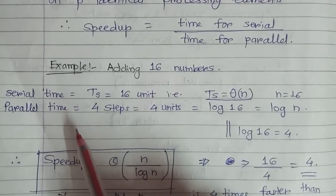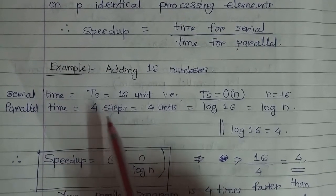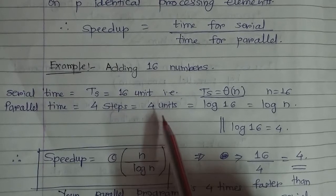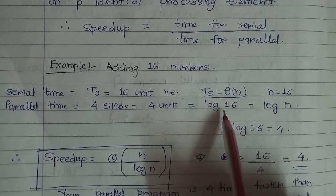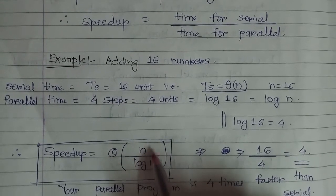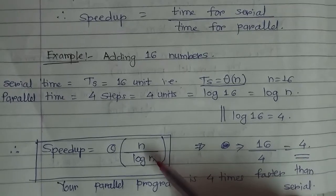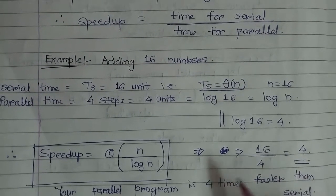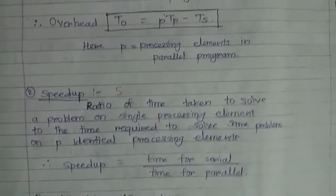In parallel, we can solve the 16-element addition in four steps, because parallel addition requires log n computation. Log 16 equals 4, so the parallel time is 4 units. Speedup is serial time over parallel time, which is n over log n. Substituting n equals 16, we get 16 divided by log 16 equals 16 divided by 4, which equals 4. So the speedup is 4 — meaning the parallel program is four times faster than the serial one.